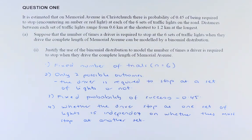Distances between each set of traffic lights range from 0.6 km at the shortest to 1.2 km at the longest. Suppose that the number of times a driver is required to stop at the 6 sets of traffic lights when they drive the complete length of Memorial Avenue can be modelled by the binomial distribution.